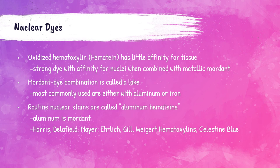The most common hematoxylin lakes are combinations of hematein and aluminum, or hematein and iron. Routine nuclear stains are called aluminum hematoxylins because aluminum is the mordant used. These include Harris, Delafield, Mayer, Ehrlich, Gill, Weigert hematoxylin, and celestine blue.